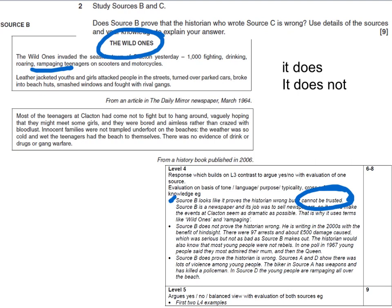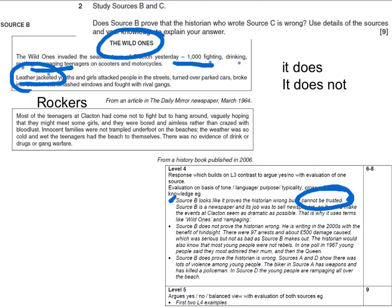Also, you might want to say that a thousand people probably were there, but were they all fighting, drinking, roaring, and rampaging? Or were they just watching what's what? 'Leather-jacketed youths and girls attacked people in the streets, turned over parked cars.' Again, you might take issue with the phrase 'leather jacket,' because that could be a reference to just the rockers - couldn't it? Is that just a reference to the rockers? It could be. And that might well prove to be an issue, because we know there were mods there as well.